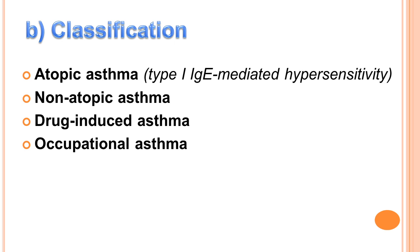We mostly focus on the first type, the atopic asthma, or we can call it a type 1 IgE-mediated hypersensitivity reaction. It is the most common form and usually affects children and young adults. Chúng ta tập trung vào hen suyễn loại 1, đó chính là hen suyễn dị ứng. Còn được gọi là phản ứng quá mẫn loại 1 với IgE qua trung gian tế bào. Đây là dạng phổ biến nhất, thường ảnh hưởng lên trẻ em và thanh thiếu niên.